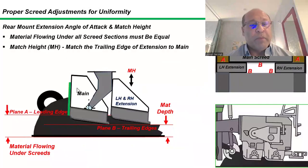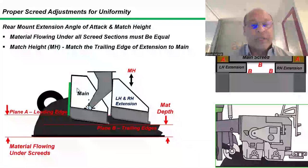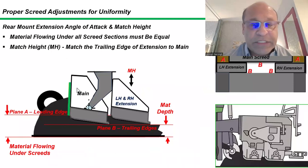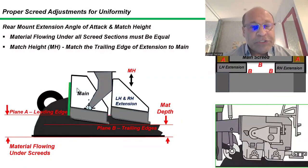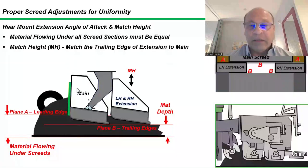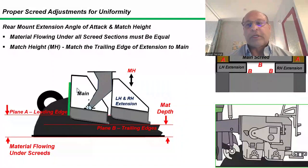We're looking at a rear mount screed on Plane A, which is the leading edge of the screed. All three screed sections must shear the material off on Plane A as we move forward. Plane B is the trailing edge. So if we have a 10-foot screed and we're paving 12-foot wide with each extension out one foot, for us to have consistent mat depth from end gate to end gate, all three screed sections' trailing edges — Plane B — must be on the same level, same height. To have uniform compaction, all three leading edges must shear the material off at the same point — Plane A — and that will give us uniform compaction and uniform surface texture.